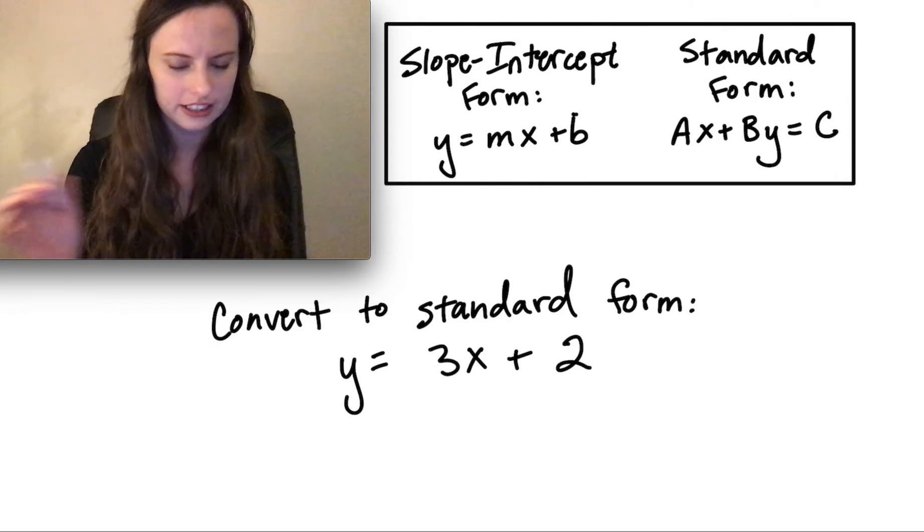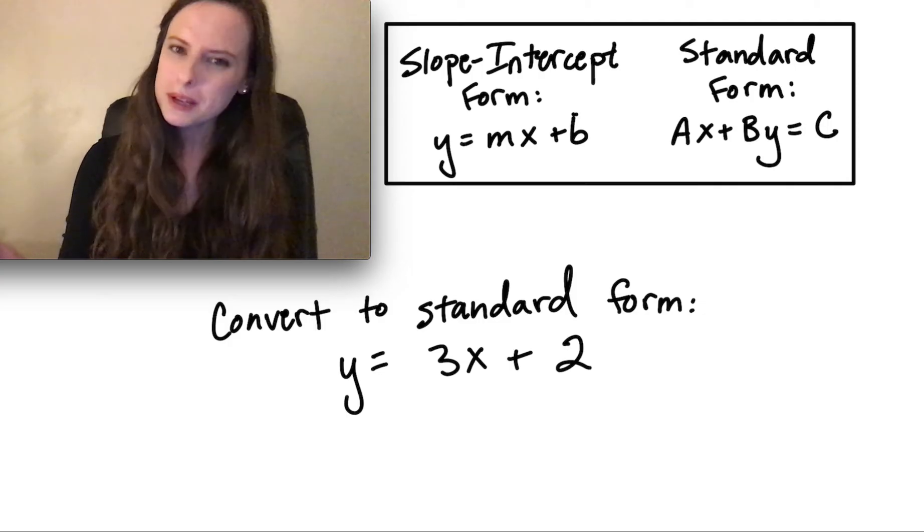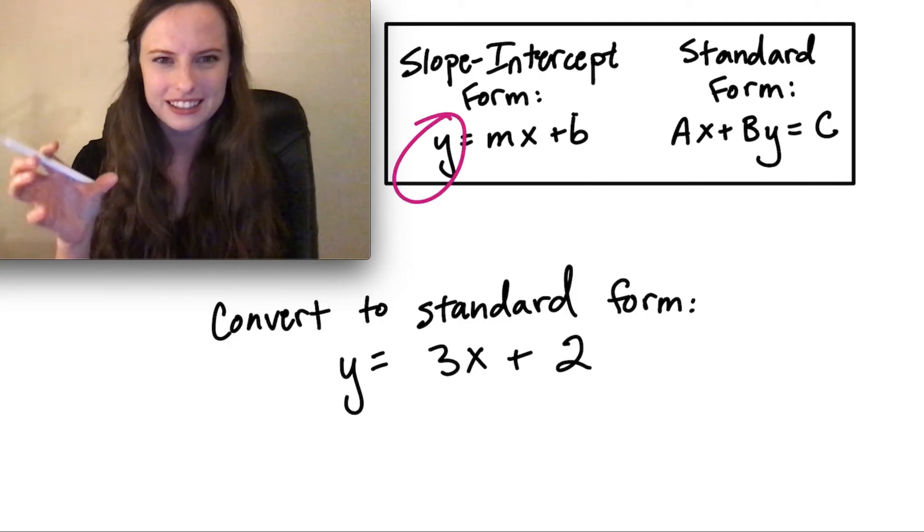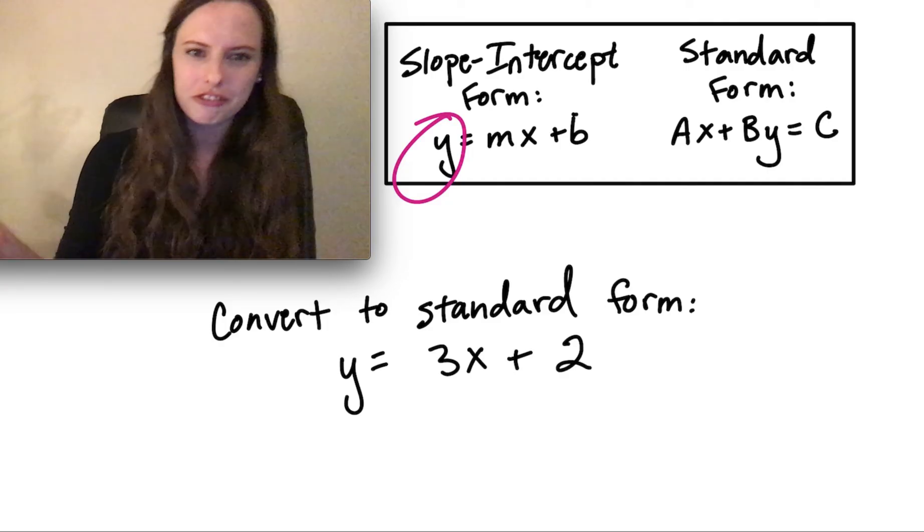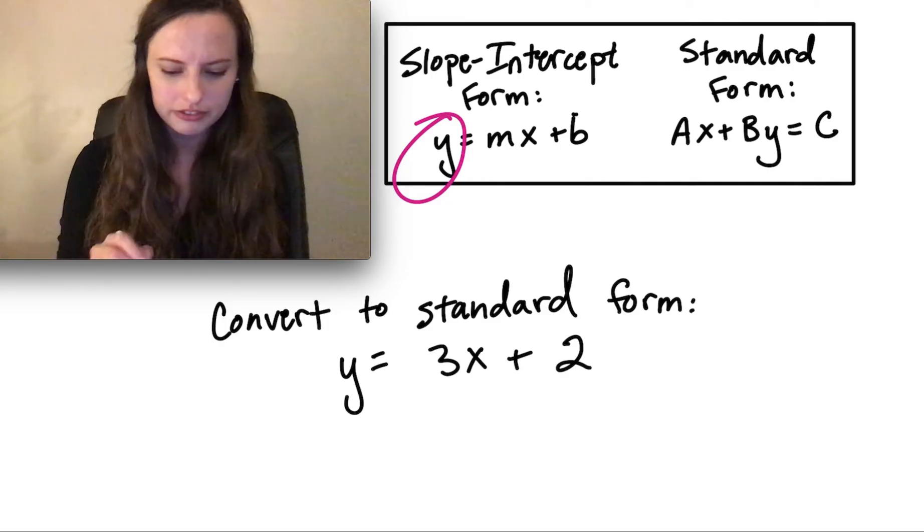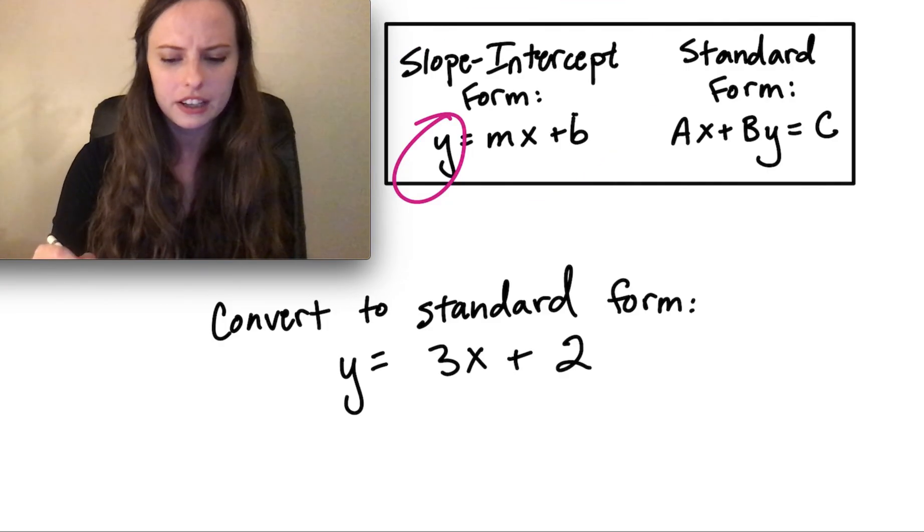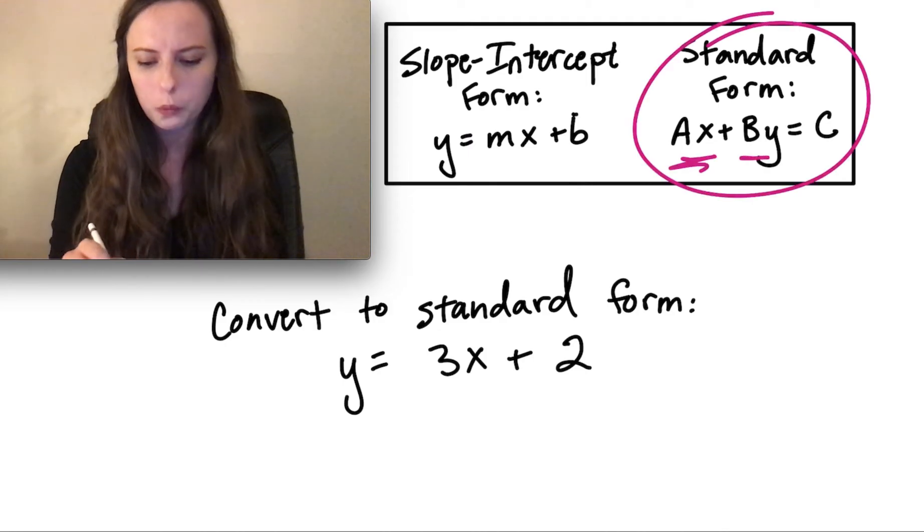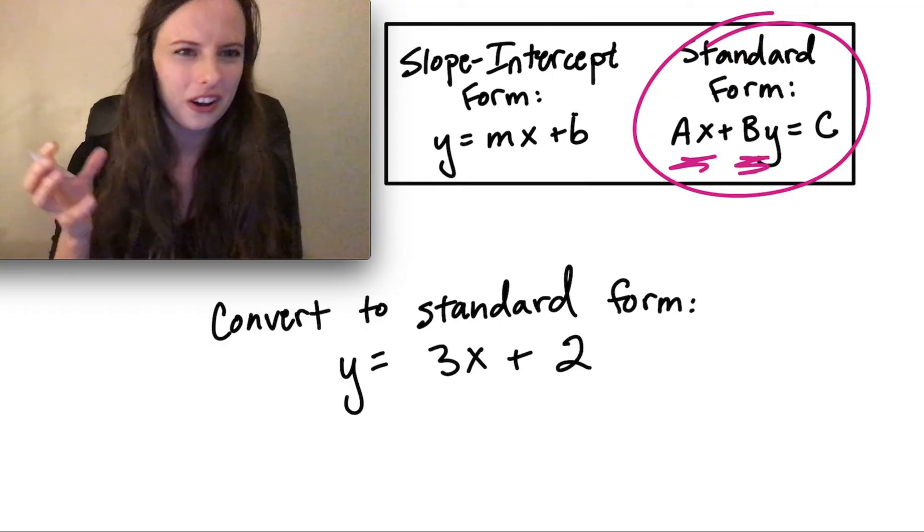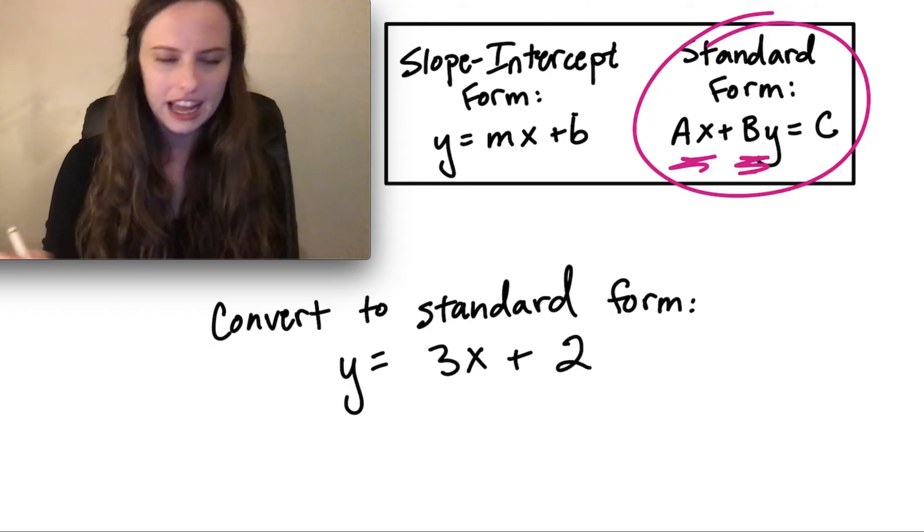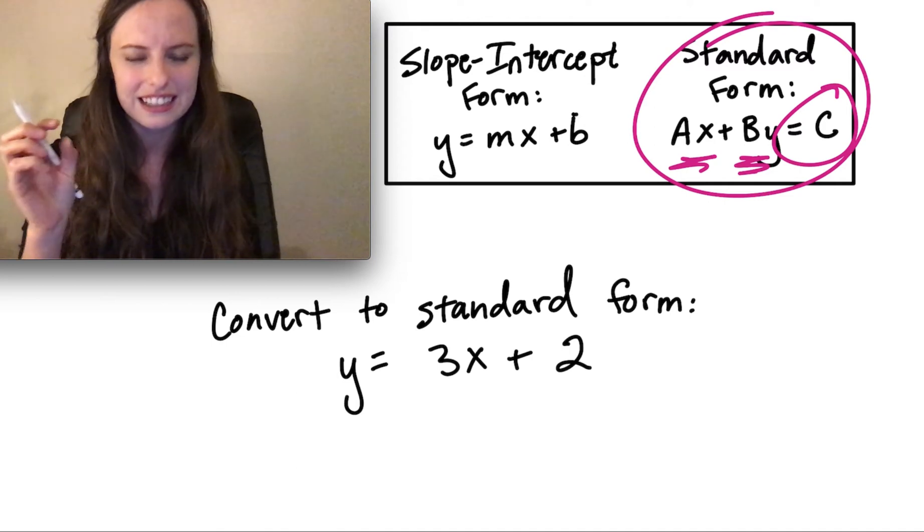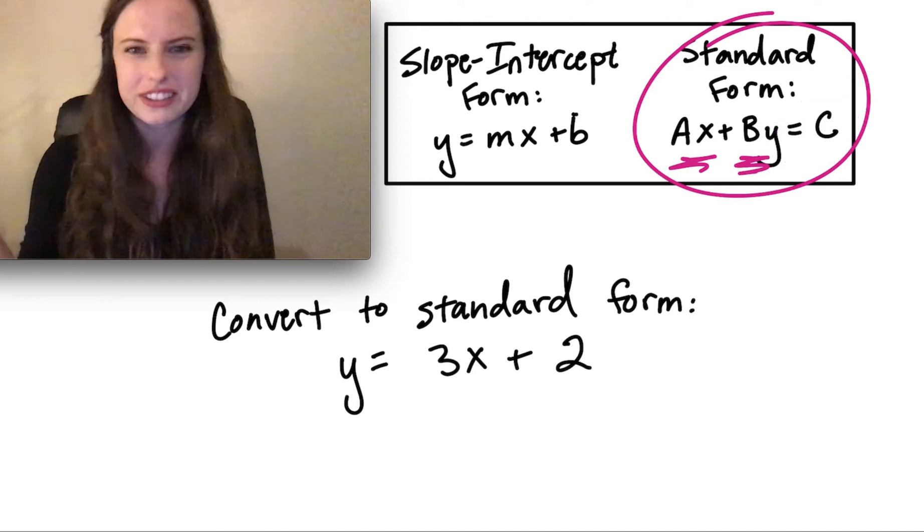So a few reminders on these two different forms. With slope-intercept, you have that y equals, so the y starts by itself. And we're going to try to convert from the y being by itself in slope-intercept form into standard form where the x and the y are together on the same side of the equal sign. And actually, what you have by itself in standard form is just that constant c, which is just a number.